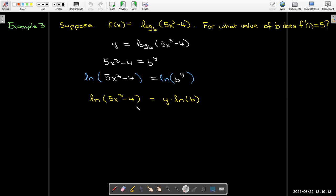Let's take the derivative of each side. So the derivative on the left-hand side is just 1 over 5x cubed minus 4. Multiply that times the derivative of the inside, which is 15x squared. On the right-hand side, I just get y prime times the natural log of b. So I can solve this for y prime.